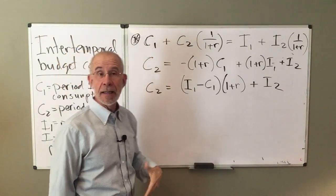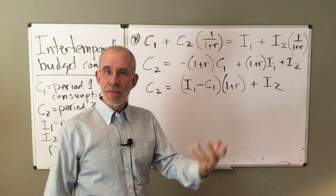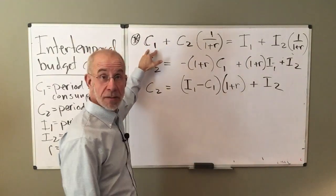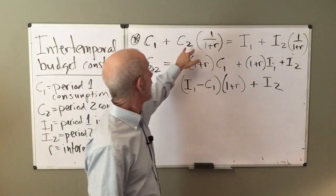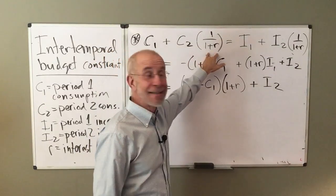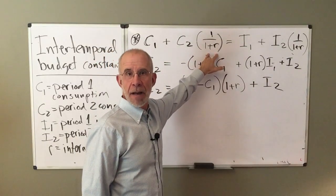Now, this equation up here, represented by star, is that idea. The left-hand side is the discounted value of consumption. So period one's consumption and period two's consumption discounted by the interest rate.